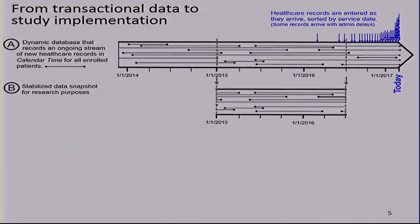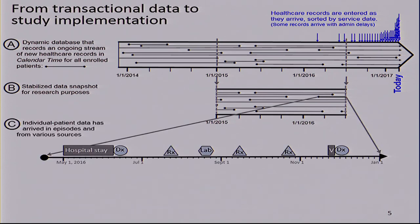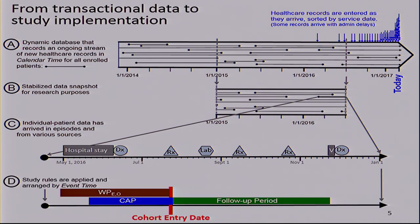What we usually do first is stabilize the data in order to be reproducible — we do the analysis today and tomorrow we get the same findings. Then we look at each of the lines, each being a patient, and observe all healthcare encounters: hospitalizations, pharmacy dispensings, diagnoses, and procedures. On those data we then implement our study — here a cohort study. That's all fairly straightforward; just want to make sure we're all talking about the same thing.